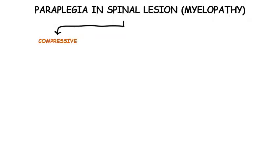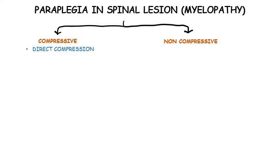Damage to the spinal cord, or myelopathy, is a major cause of paraplegia. Myelopathy may be compressive or non-compressive. Compressive lesions cause injury by direct pressure effect, but can also block the arterial blood supply leading to ischemic damage, and may also impede venous blood flow, producing venous congestion and subsequent injury to the spinal cord.